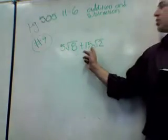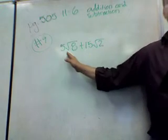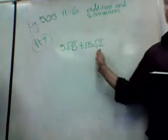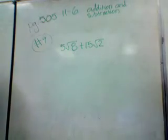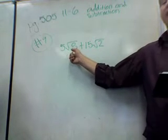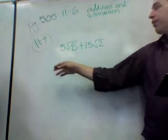Let's do number 9. So 5 root 8 plus 15 root 2. You have two different radicals, and so you can't, by the rule, you can't combine these, at least not yet. What's our step? Well, you could break that down. If you break that down, hidden in that root 8 is a root 2. So let's break it down first.